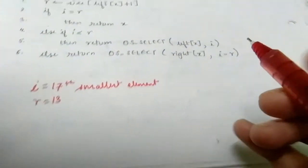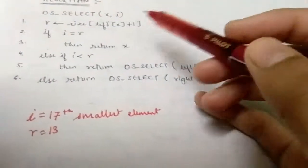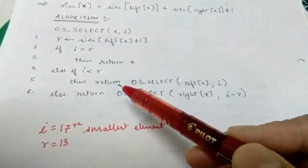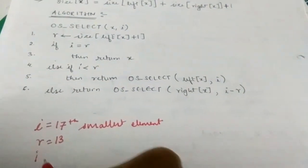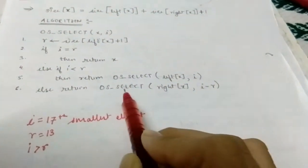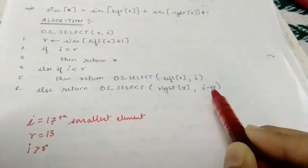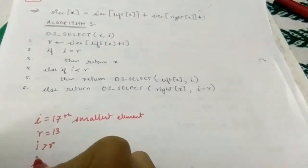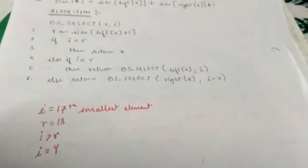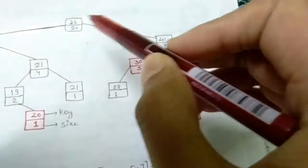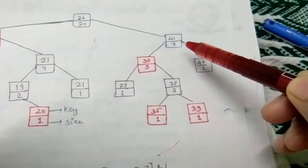We now check whether i equals r or i is less than r. Here i is greater than r, so we follow the condition and return OS-Select(right(x), i minus r). So i minus r gives i equals 4, and control moves to the right of x, which is node 41.